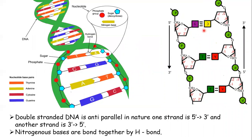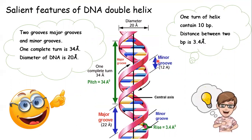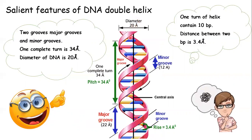A-T pairs with two hydrogen bonds and G-C pairs with three hydrogen bonds. In the DNA double helix, there are two regions: a narrower region called the minor groove and a broader region called the major groove. These two grooves are accessible for various types of solvents and proteins. The average length of one turn of helix is approximately 34 angstroms, with approximately 10 base pairs per turn. We can calculate the distance between two base pairs by dividing the length per turn by the number of base pairs per turn.